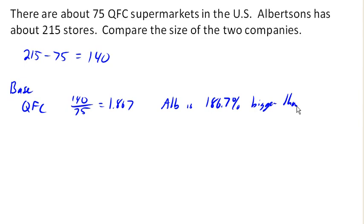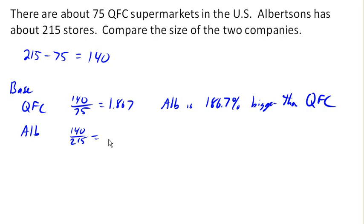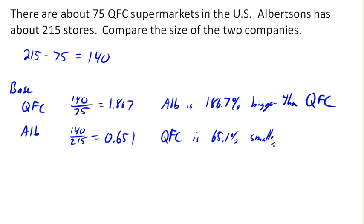Again, this is relative to QFC — Albertsons is 186% bigger. Now if we use Albertsons as the base, then we would get 0.651, which would tell us that QFC is 65.1% smaller than Albertsons.